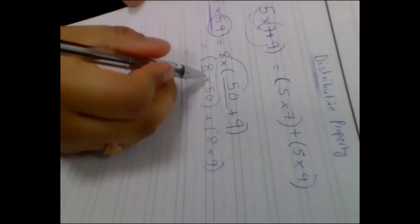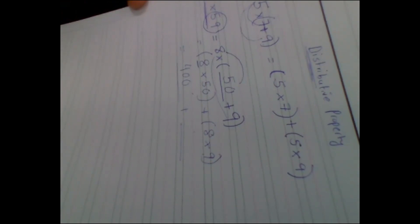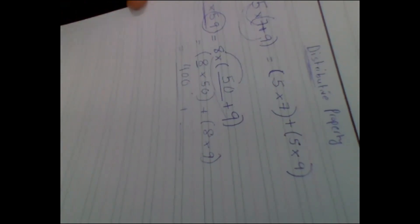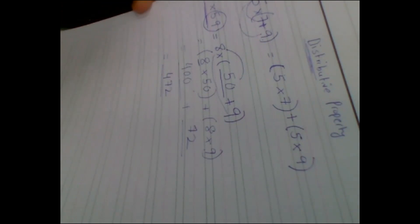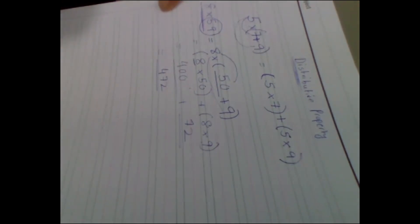When I say 8 times 50: 8 times 5 is 40 and there is one more zero — so 400. Plus what is 8 times 9? 72. So your answer is 472. This is page number 18. You understood what I'm explaining? Yes. The distributive property is the easiest until now.